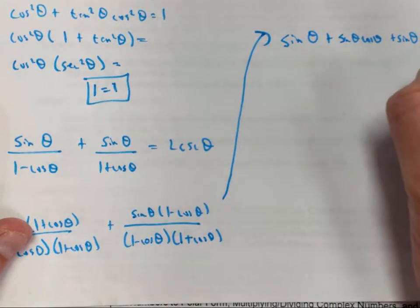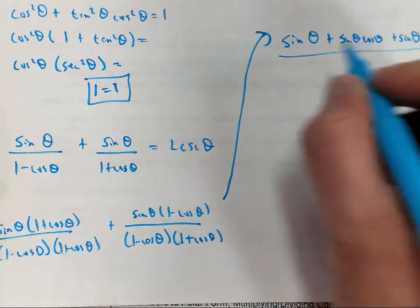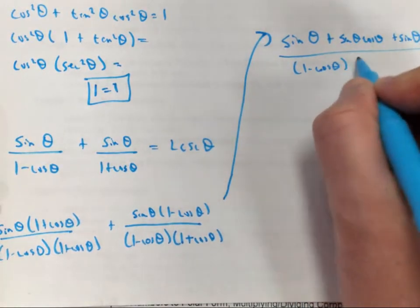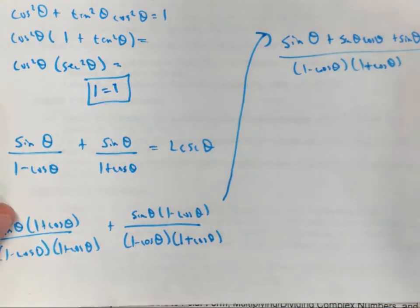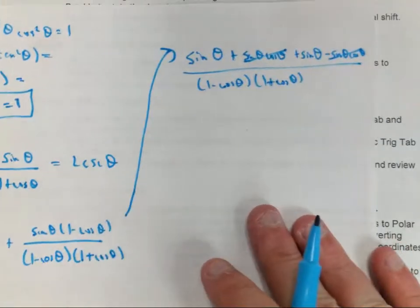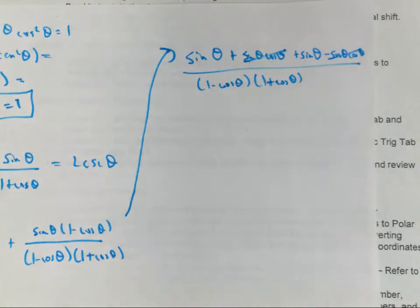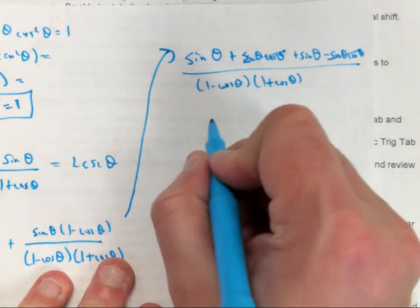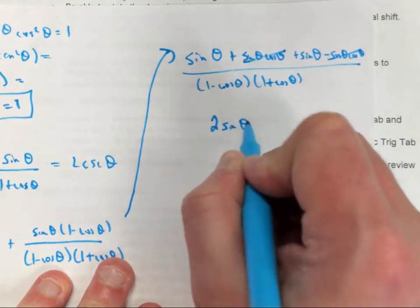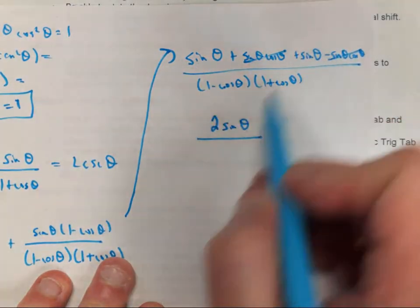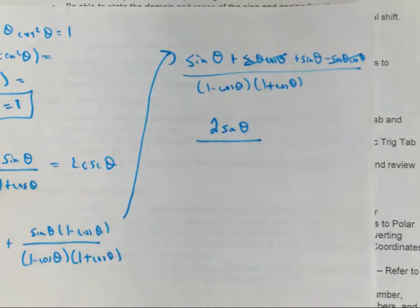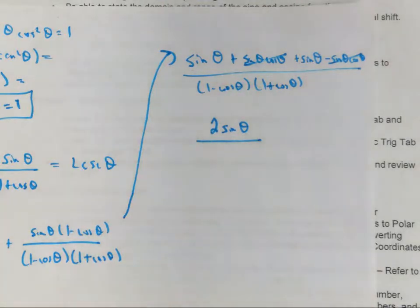We will be dismissing from fifth period class those that attend. Students, if you have a ticket, you're going to be released from fifth period. You've got to show your ticket to your teacher to go to the game. If you do not have a ticket, you will stay in fifth period class. Teachers that want to go to the game have worked things out with colleagues to watch students. If you are not going to the game this afternoon, you will stay in fifth period.